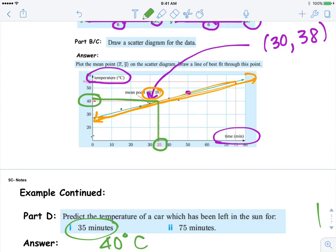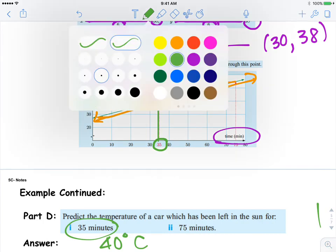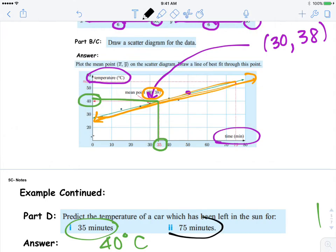Part II is asking for 75 minutes. So you go over on the x-axis and then over, and you would read that number, which is 55.